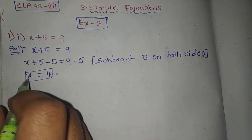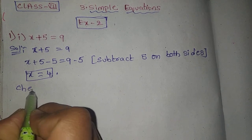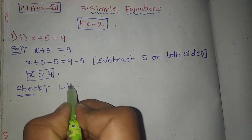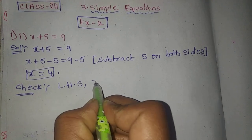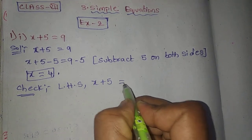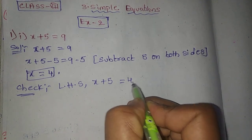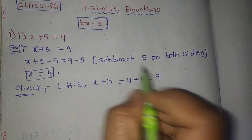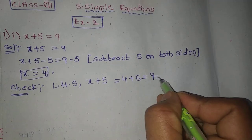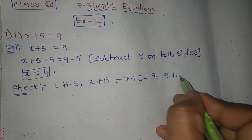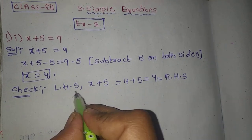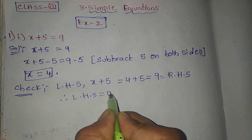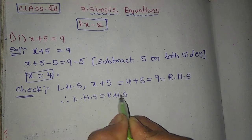The correct answer is equal to 4. Now we do the checking process. We should substitute in the LHS part. x plus 5 is the LHS. So x value is equal to 4, so 4 plus 5 equals 9. RHS is 9, so LHS equals RHS.